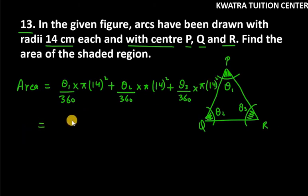So now in this case, what you can do is take common whatever we have in the above equation. We can take pi common, we can take 360 common, we can take 14 square as well. So in the first term we have theta 1, in the second term we have theta 2, in the third term we have theta 3.